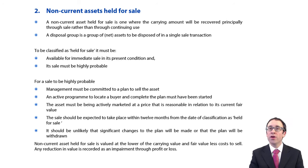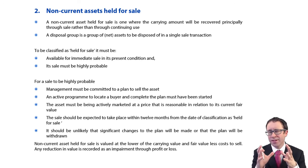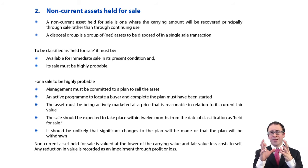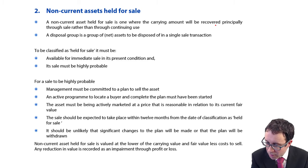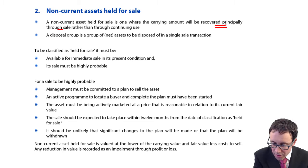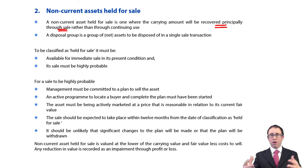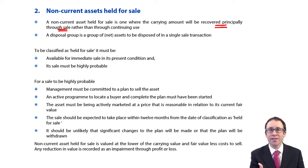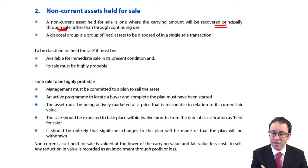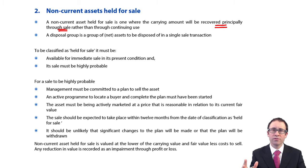Let's have a look at the non-current asset held for sale. That's whereby we have a non-current asset that we have made the decision to sell — we're going to recover the value of the asset through a sale as opposed to any continuing use, hence why it's no longer non-current. Note that if you're scrapping an asset, that will not be a non-current asset held for sale because you're not going to recover anything from a sale — anything scrapped is just written off.